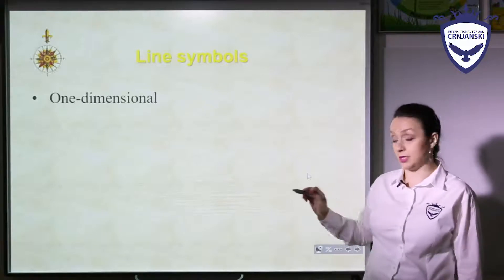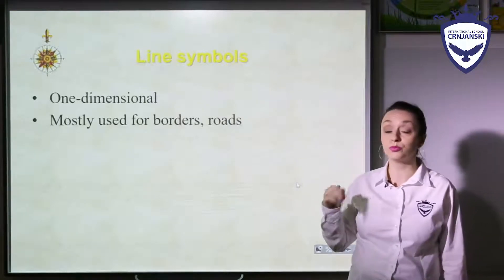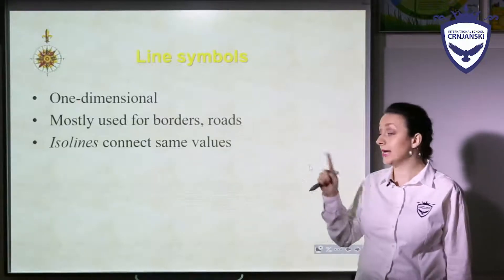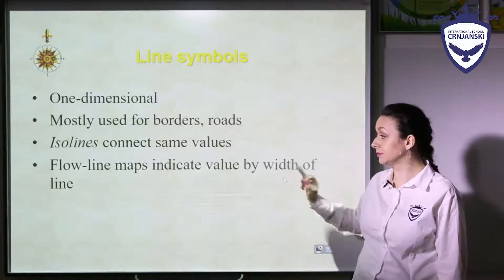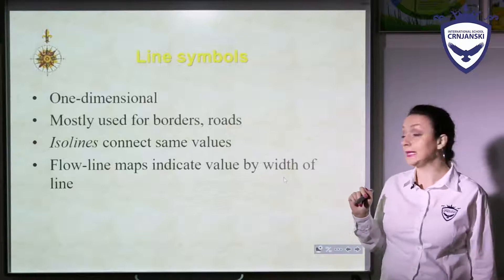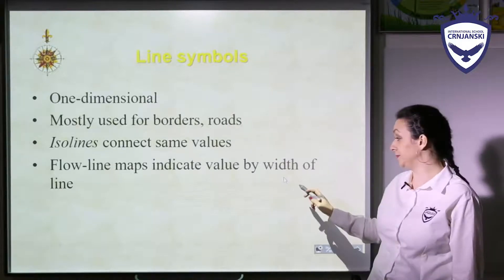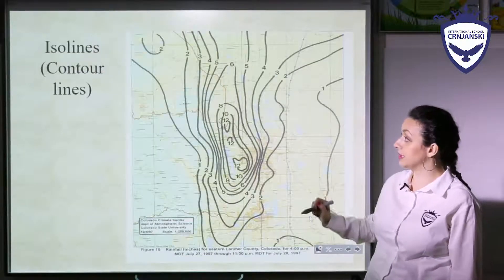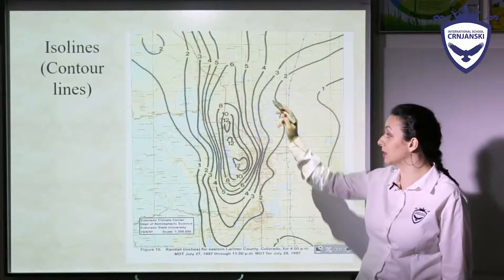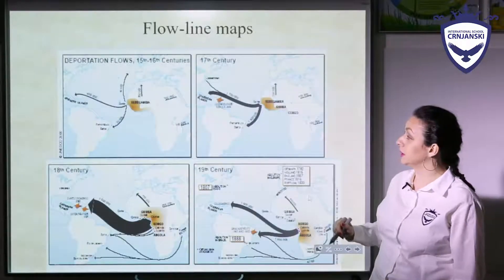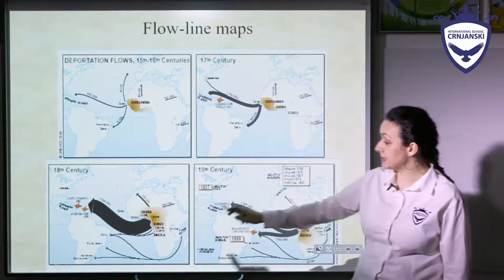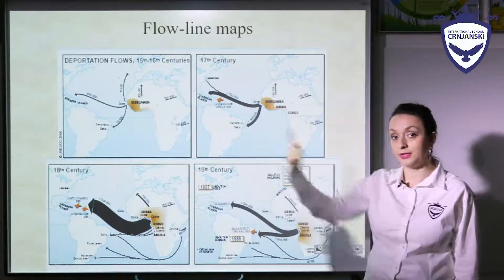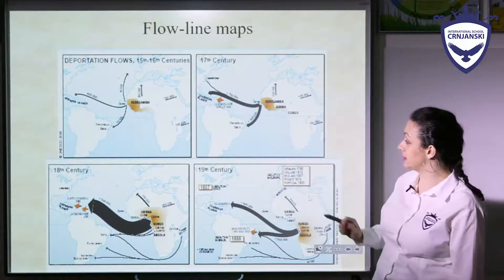What about line symbols? They are one-dimensional and are mostly used for borders or roads. There are isolines that connect same values, and flow line maps that indicate value by the width of the line. For example, contour lines are a type of isoline, and in flow line maps the difference in width represents different things on the map.